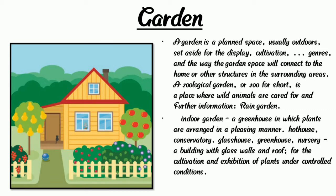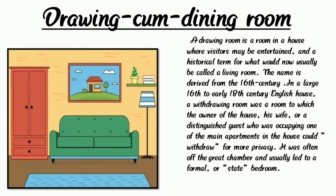Now we are going to learn a next place, which is the drawing come dining room. We all have a drawing room or dining room. Here we can see a photograph of a drawing room or dining room. In a dining room we have a sofa and various types of decoration and furniture. A drawing room is a room in a house where visitors may be entertained — a historical term for what would now usually be called a living room.